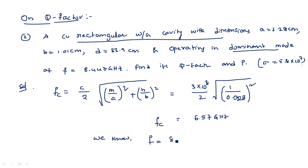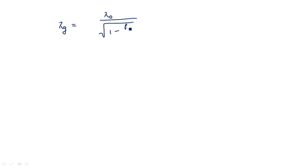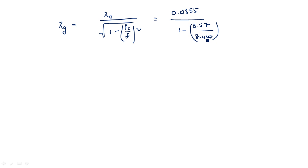From the problem, the operating frequency f = 8.44 GHz. The operating wavelength λ = c/f = 0.0355 m. The guide wavelength λ_g = λ / √[1 − (f_c/f)²] = 0.0355 / √[1 − (6.57/8.447)²] = 0.0565 m.